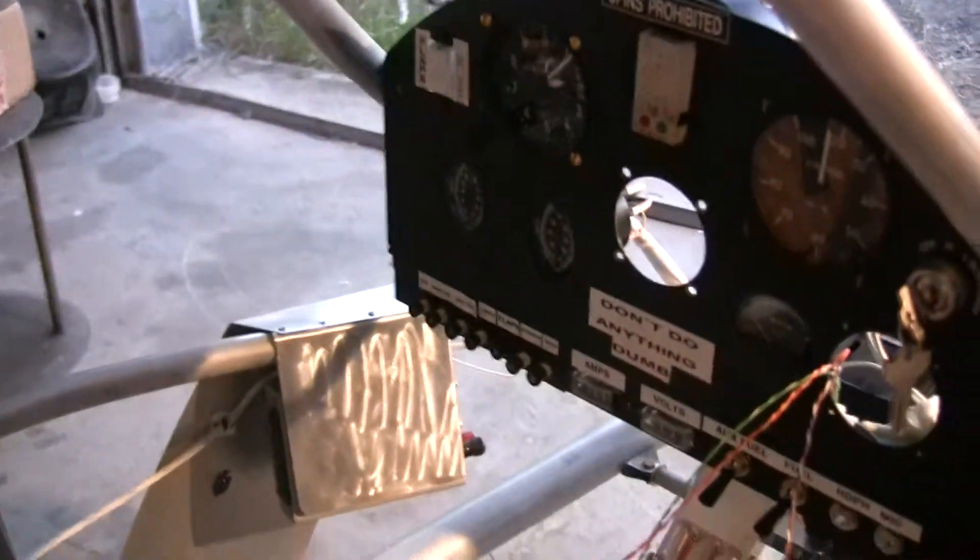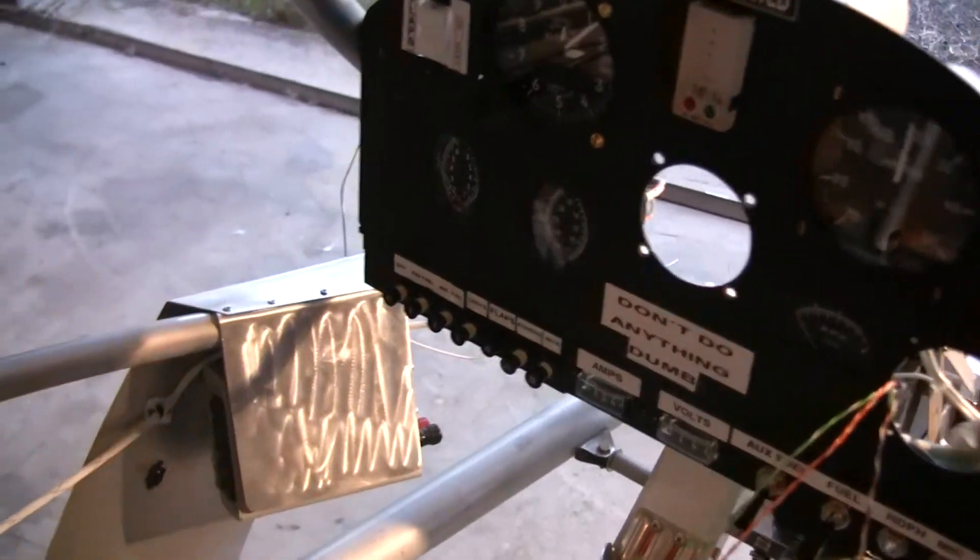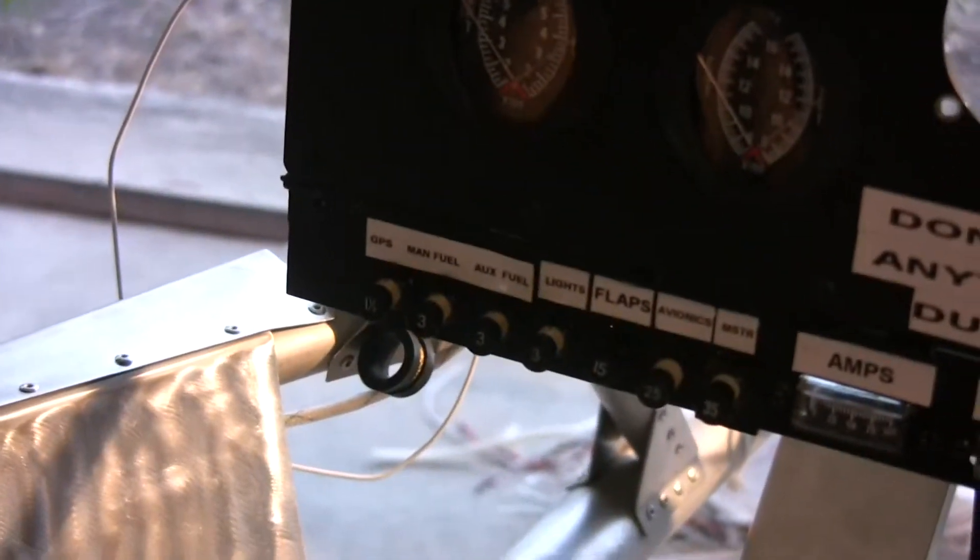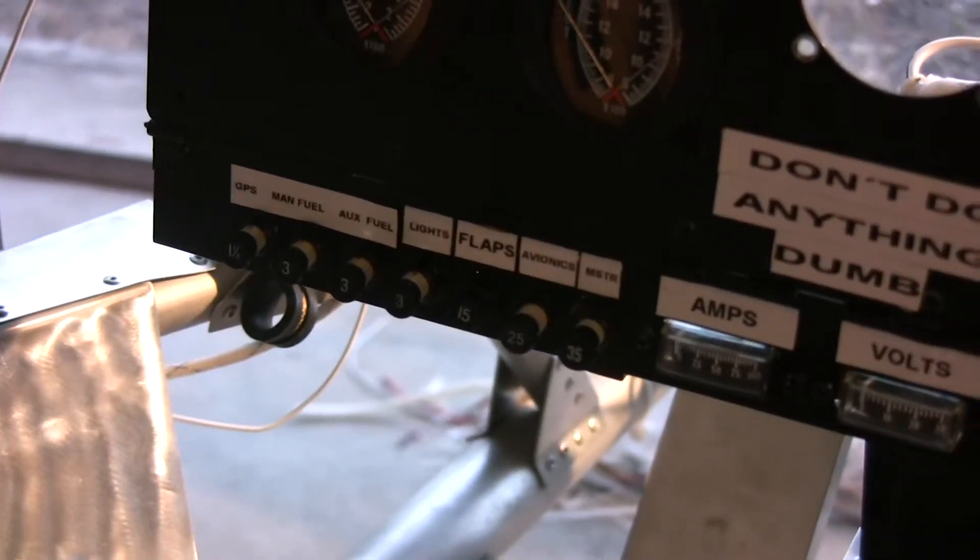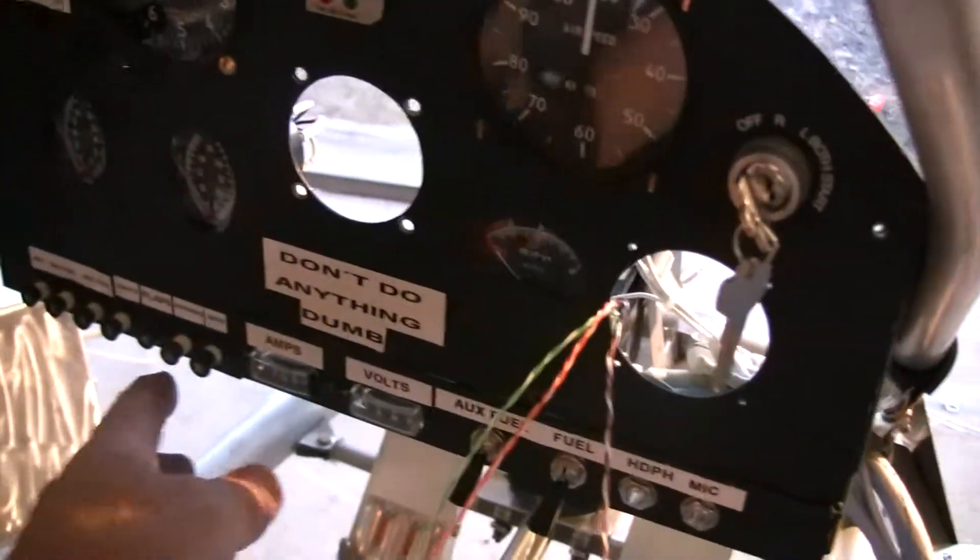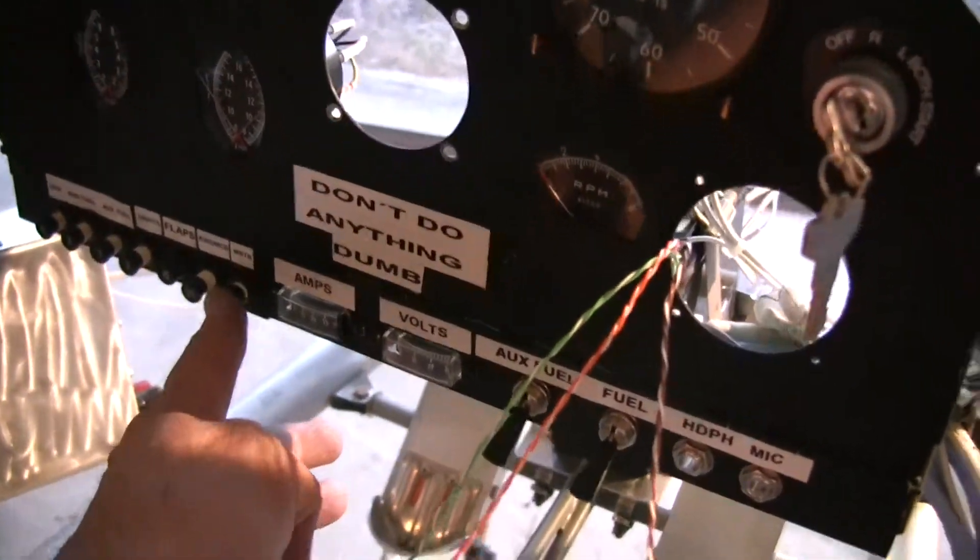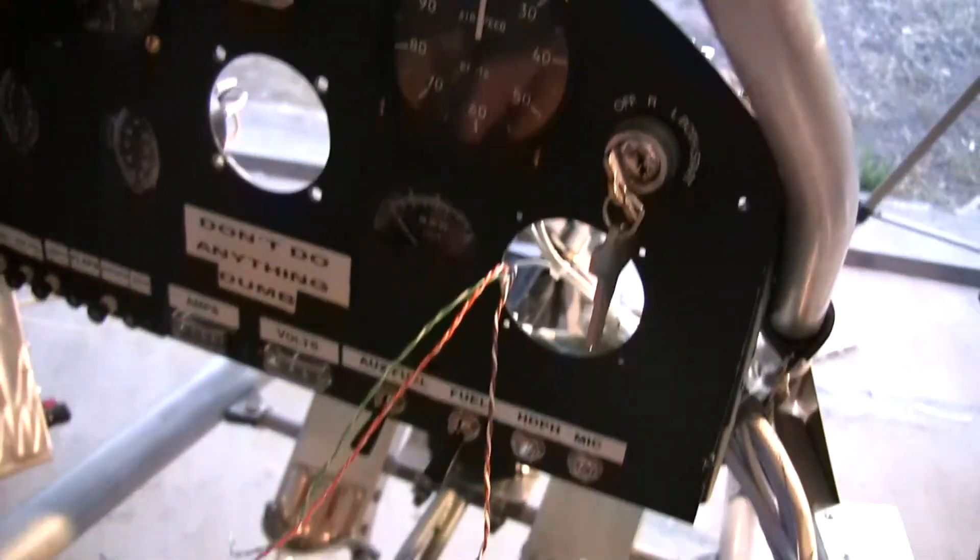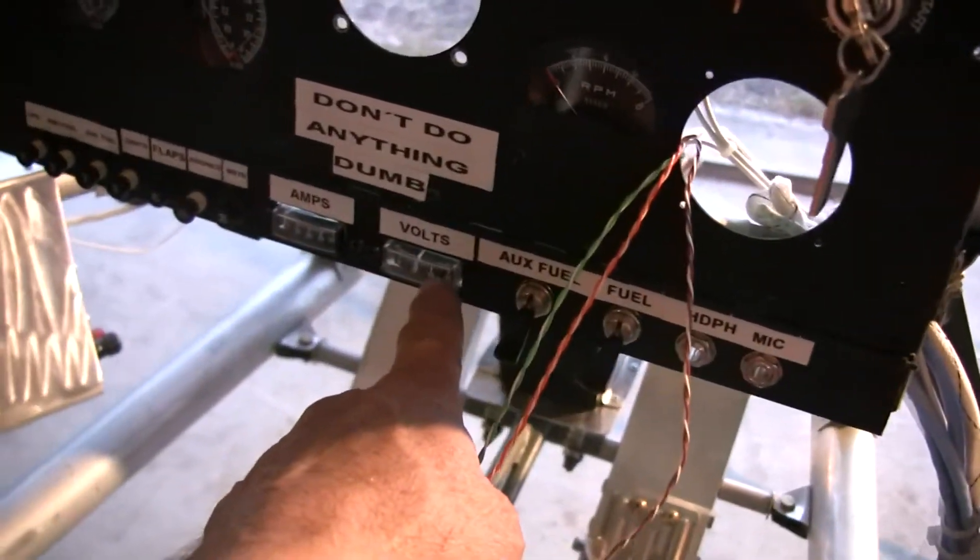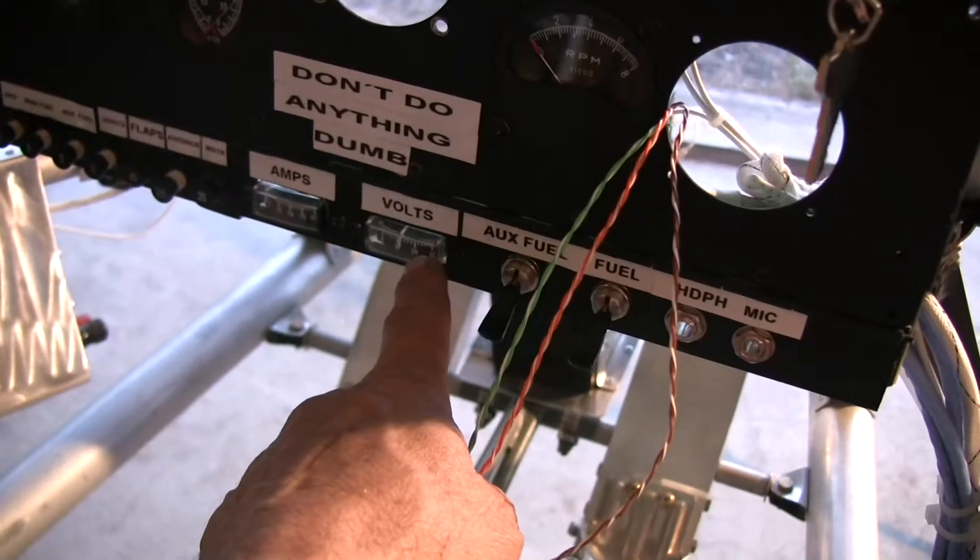They each have their own breaker and I'll try to zoom in here. You can see they each have their own primary breaker, and there is a master breaker on the end here which is rated for 35 amps. When it's engaged, the voltmeter gives an indication of the amount of voltage in the circuit.